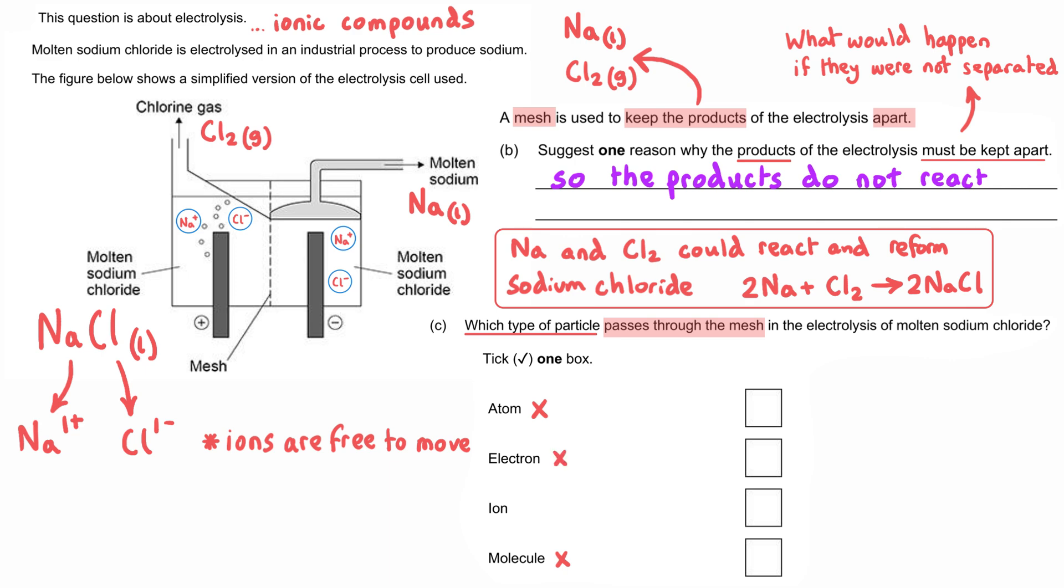We can discount the electrons. They are too small and too highly charged to exist by themselves, and can typically only be shared or transferred. In the few cases where we get delocalized electrons - metals, graphite, and graphene - electrons can be free to move, but that's not the case with molten ionic compounds. It must be the ions that are free to move through that mesh, because the sodium ions need to move towards the negative electrode, and the chloride ions need to move towards the positive electrode.